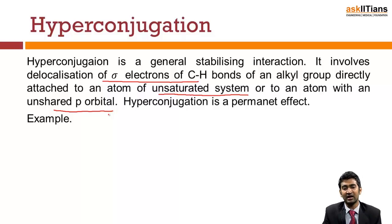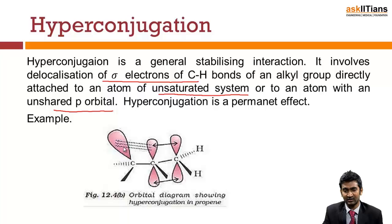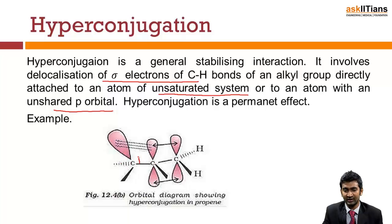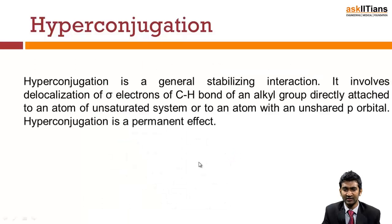When delocalization of sigma bonds occurs to a vacant p orbital, we call this the hyper conjugation effect, and it is a permanent effect. You can see here I have a triple bond; these are sigma bonds, and between those triple bonds there are vacant orbitals, so the bond can travel into those vacant orbitals — this is the hyper conjugation effect.